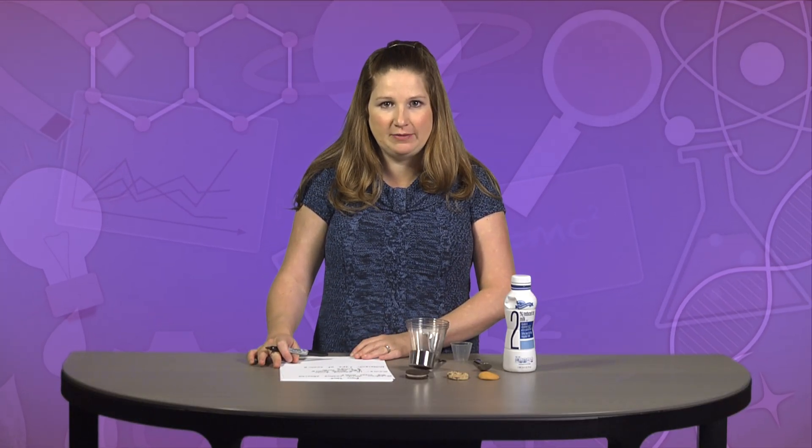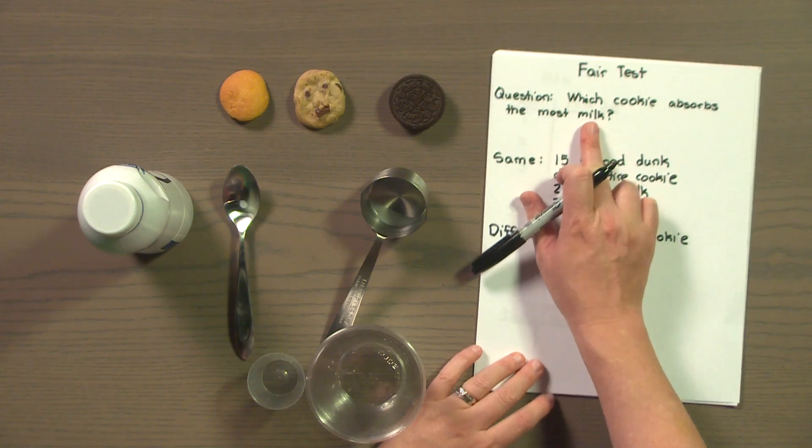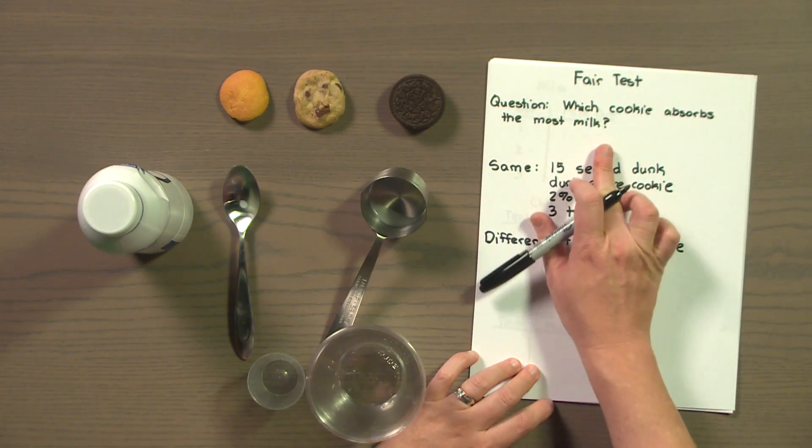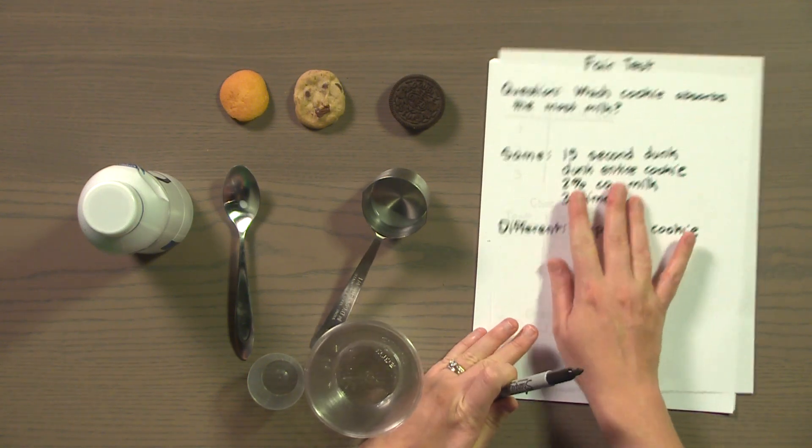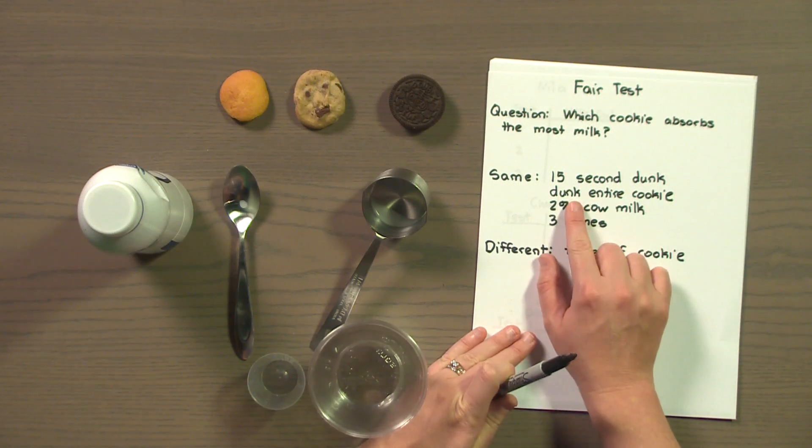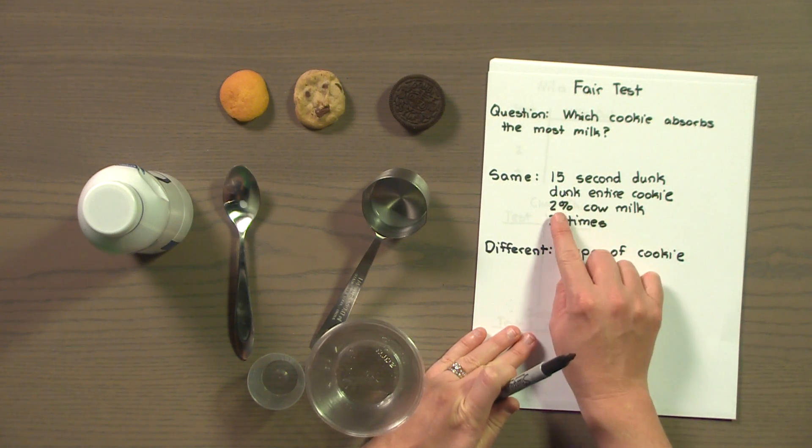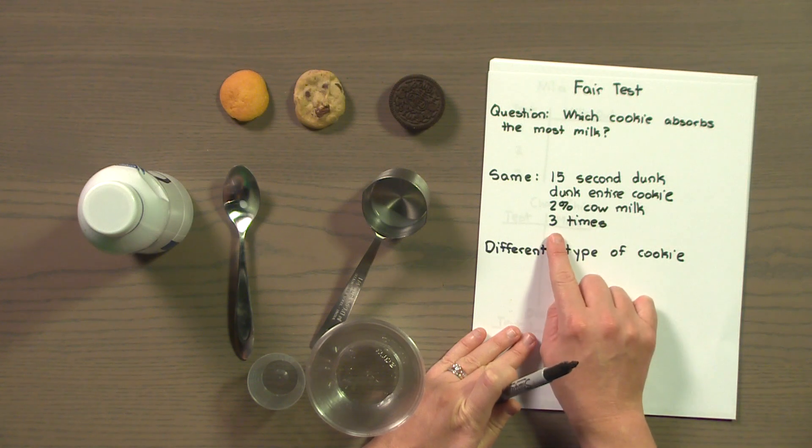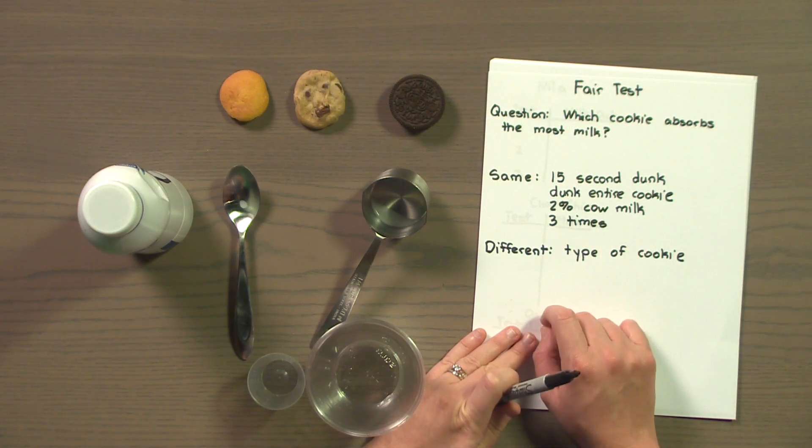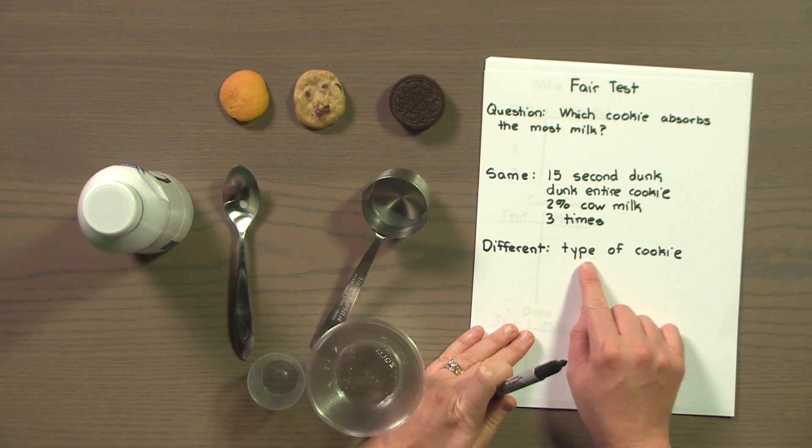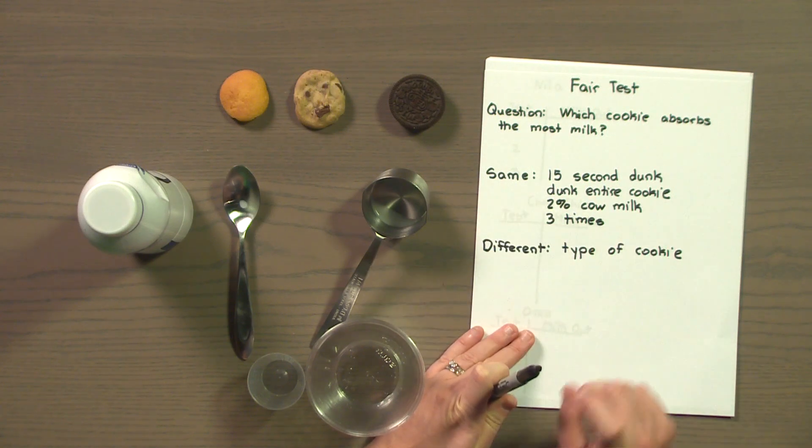So, here's our finished plan. Let's review to make sure everything looks good. Our fair test: Which cookie absorbs the most milk? We're going to keep the same: 15 second dunk, dunk the entire cookie, use 2% cow milk, and do the test three times for each cookie. The only thing that's different is going to be the type of cookie: Nilla, chocolate chip, or Oreo. Now our plan looks set. We're ready to begin the test.